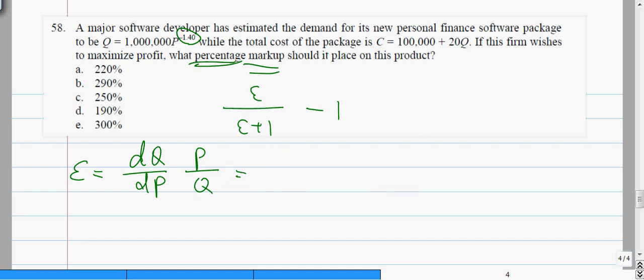So dQ/dP is the derivative of this thing, divided by P to the power 1.4, multiplied by P divided by this thing over P to the minus 1.4.